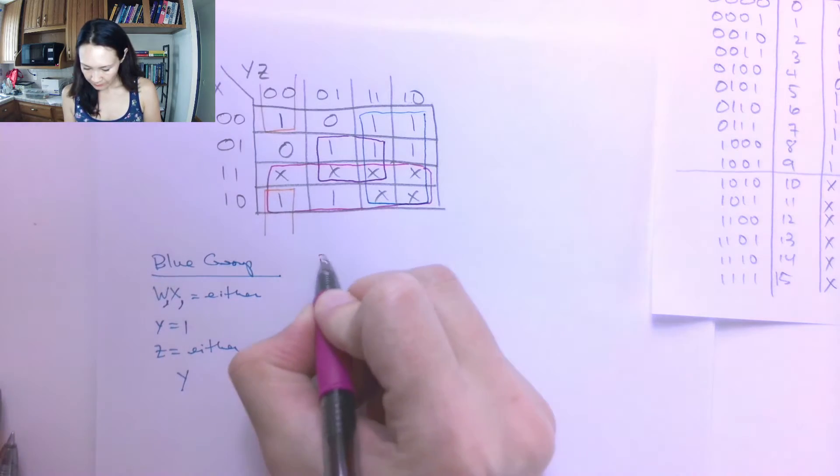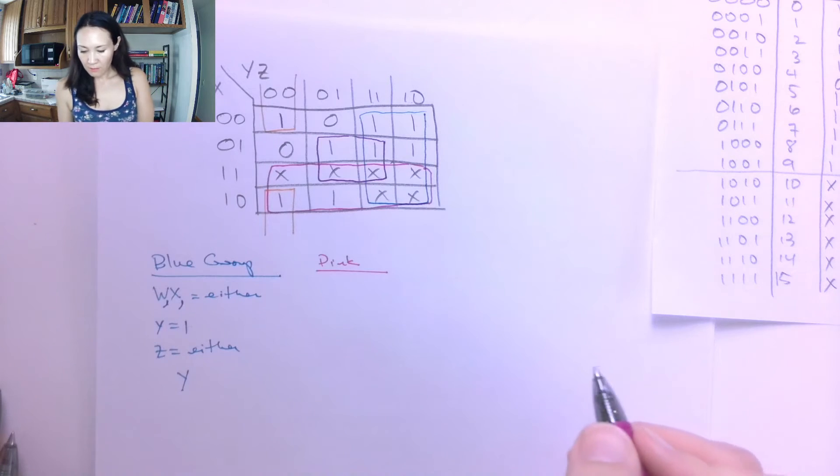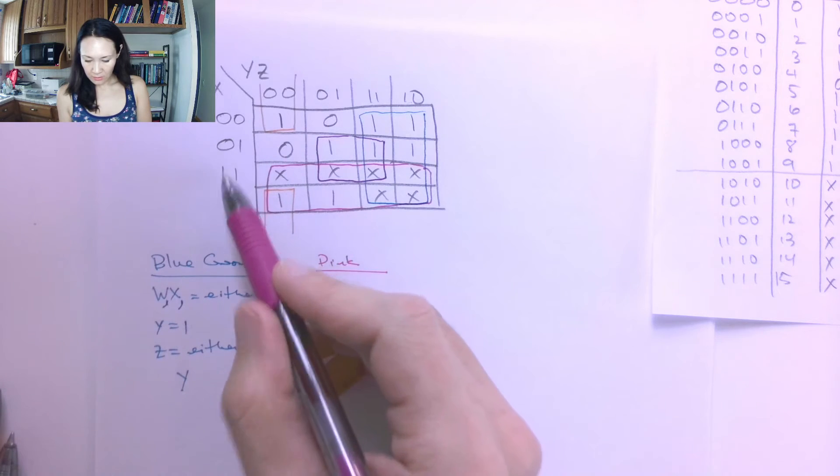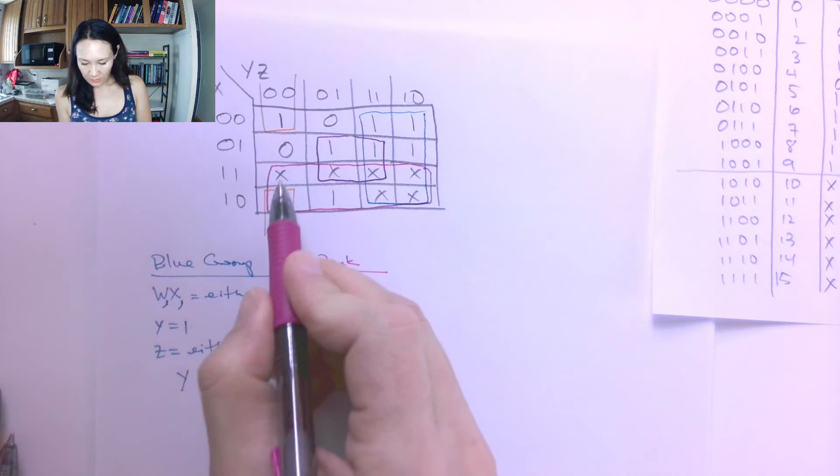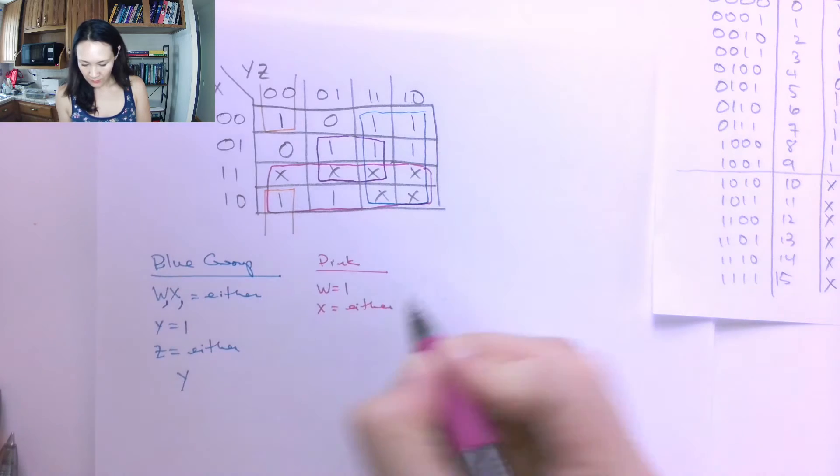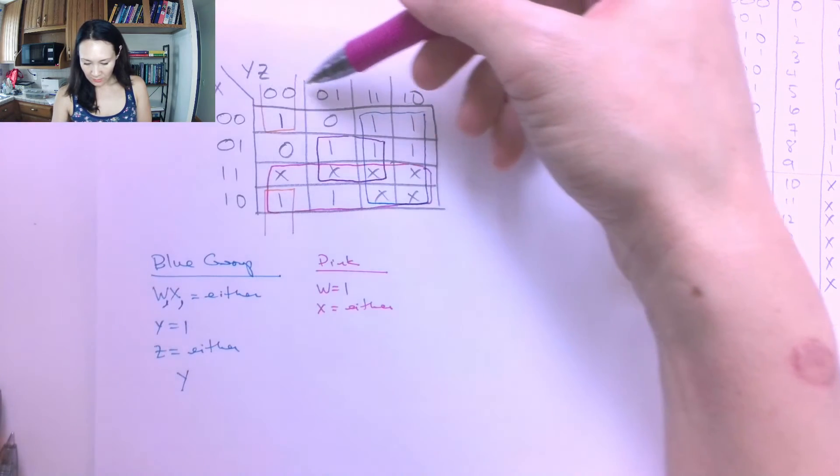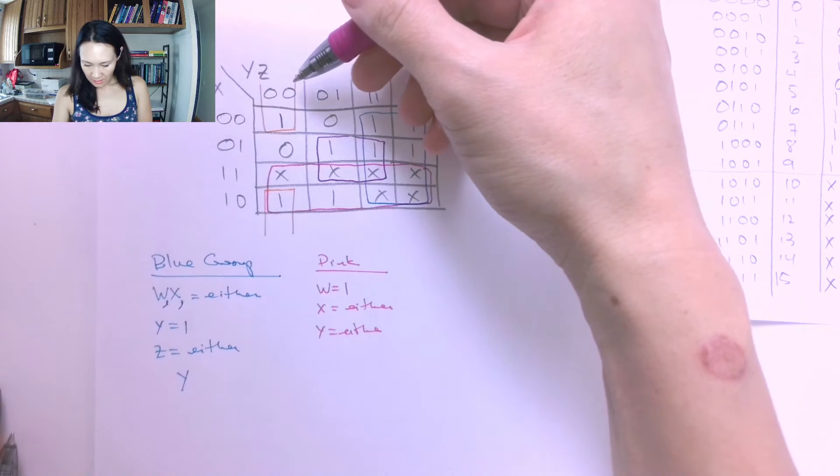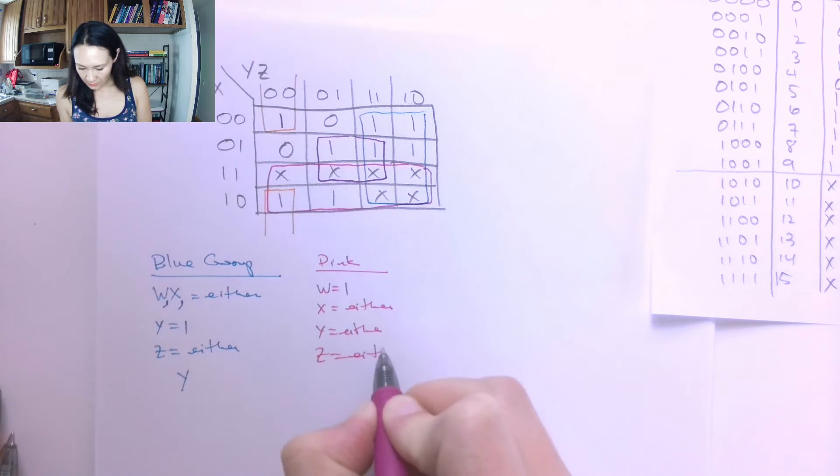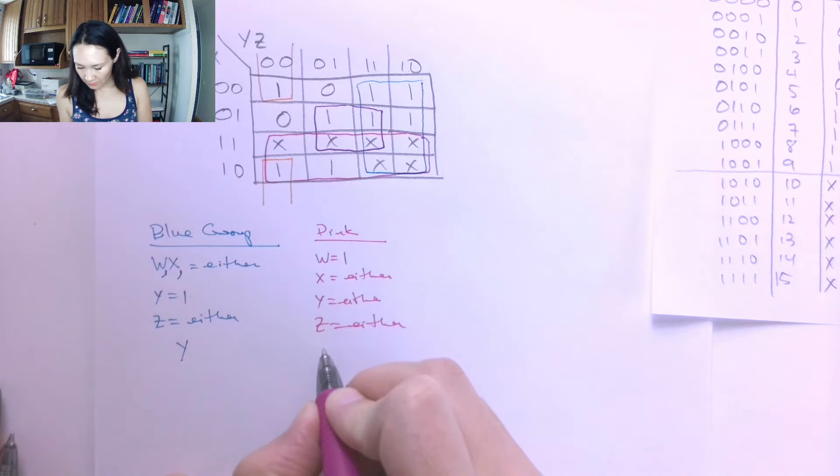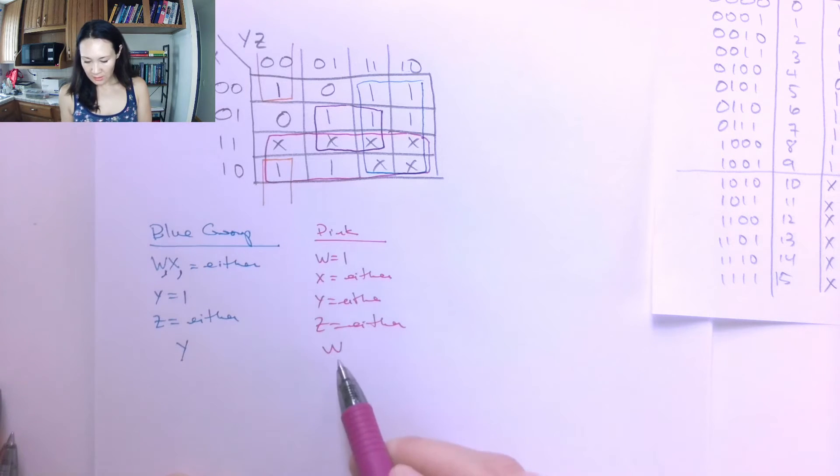Okay, great. So let me do now this pink group. So what's the contribution of the A output function from this pink grouping here? Well, I have that W is 1 for these two rows. I have X is 1 or 0, so this is either. I have that Y can be 0 or 1, and I have that Z can be 0 or 1. So it's also either. So if it can be either function, it's not forced to be one or the other. So that means it doesn't matter. So the only thing that does matter is we need W to be 1.